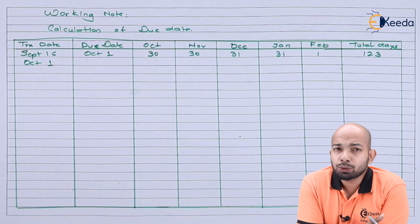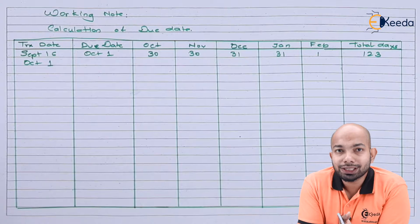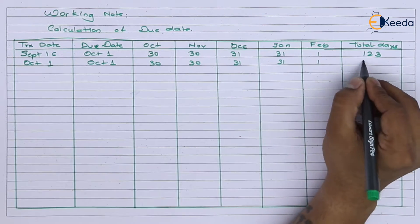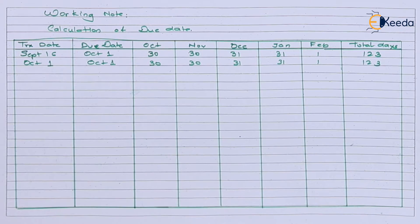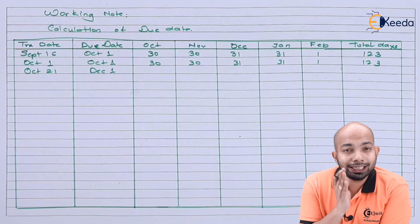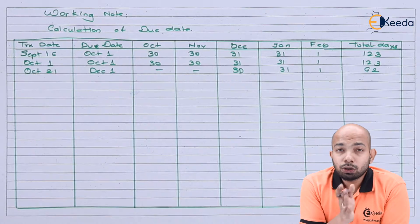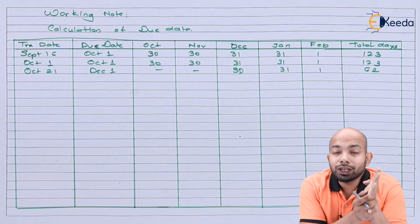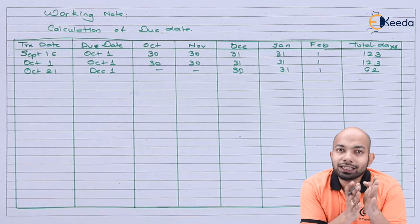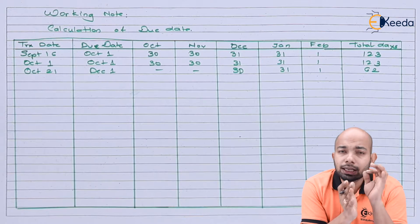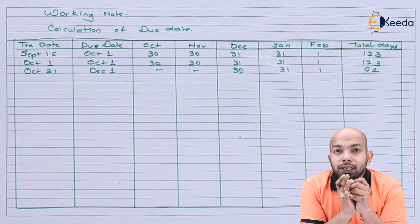The next transaction was on 1st October where cash was received. Since there is no due date, the due date is 1st October itself, and the same logic is applied. The next transaction on 21st October has a due date of 1st December, so October and November are not relevant — we start counting from December. When the due date is 1st December, you remove that due date day out of the 31 days in December and take the remaining days as the balance, which is what is considered.